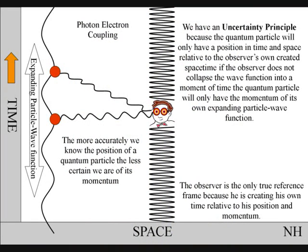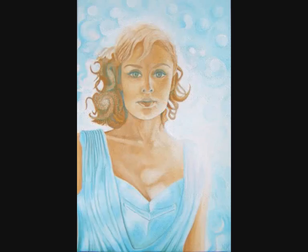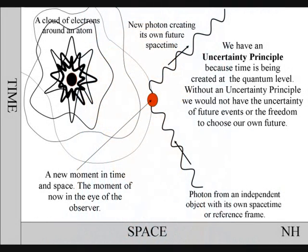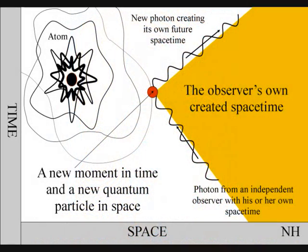Therefore, the more accurately we know the position of a quantum particle, the less certain we are of its momentum. And if we know its momentum very accurately, then we can't be quite sure where it is. This is because to observe the quantum particle, we create a photon-electron coupling collapsing the particle wave function into a moment of time and space, that is part of the observer's own created spacetime.